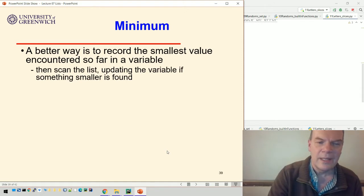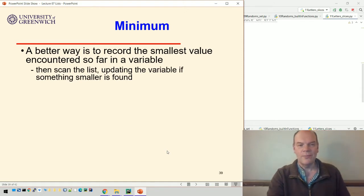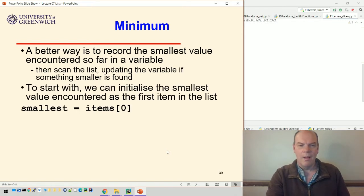So to do a minimum, a better way is just to record the smallest value found so far in a variable. And as you scan the list, you go through the list. If you find something that's smaller than that, you just update the variable. You could start with the smallest being zero, but then the whole list might contain values that are all bigger than zero.